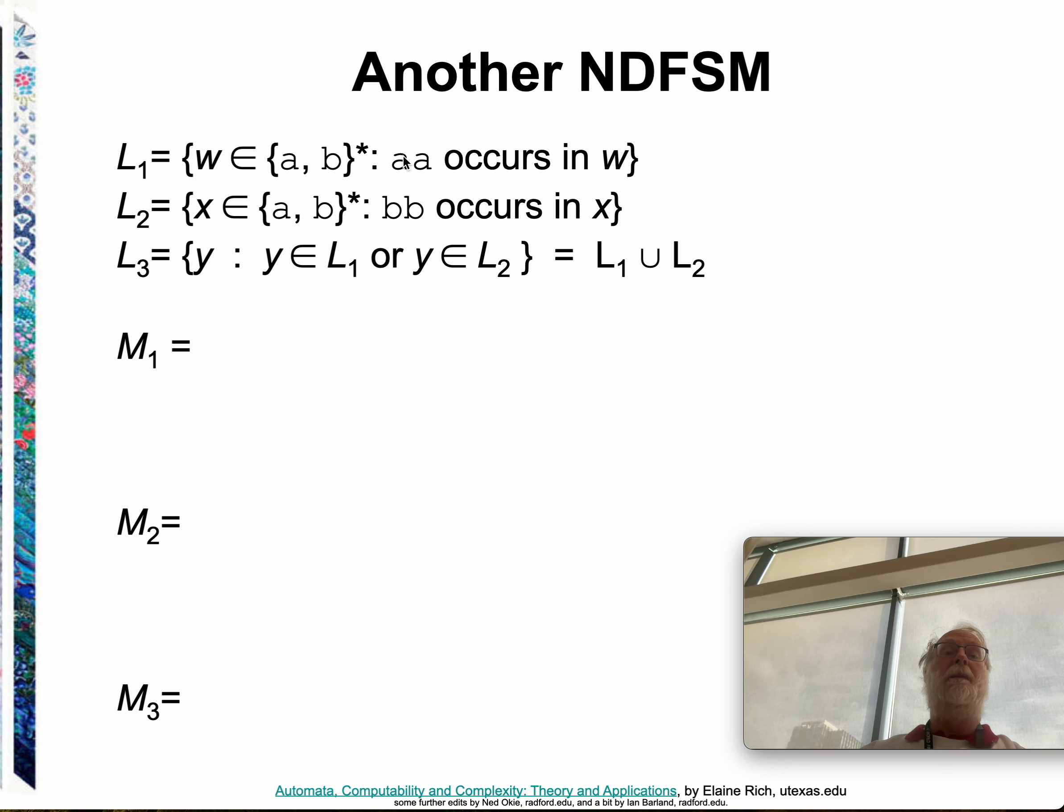A couple more. The set of all strings that contain AA. The set of all strings that contain BB. And then we can look at the union of those. And again, this is like I showed before. Make the machine for M1. Make the machine for M2. Make a machine now a non-deterministic machine that has an epsilon transition. Either epsilon transitions to M1 or the start state of M1 or to the start state of M2. So, include those two smaller machines together to make a bigger machine.